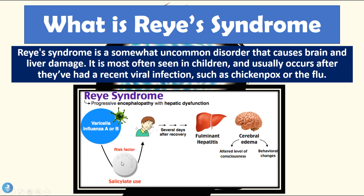Another important point is that there's a risk factor involved in the development of Reye's syndrome, and that is salicylate use — specifically aspirin. In patients infected with one of these viruses who go on to take aspirin several days after recovery from chickenpox or flu, we will see fulminant hepatitis and cerebral edema, which causes altered levels of consciousness and behavioral changes. The two most commonly affected organs are the brain and liver.